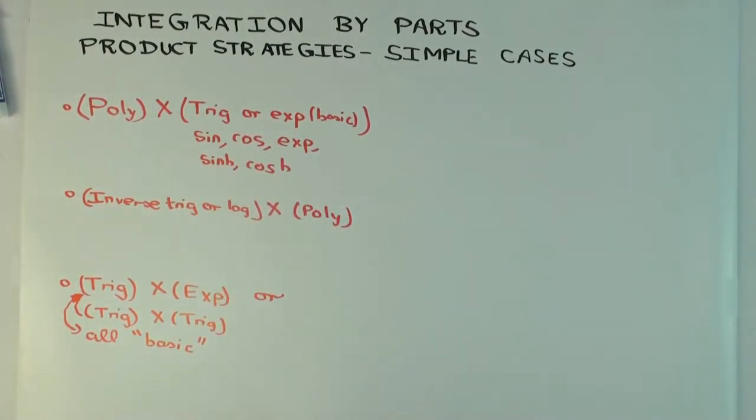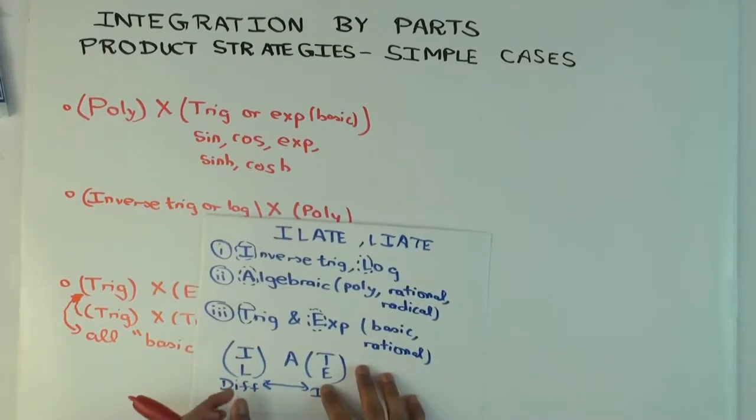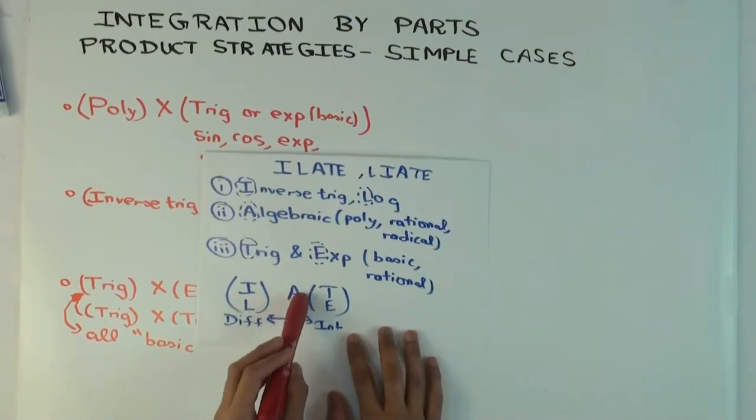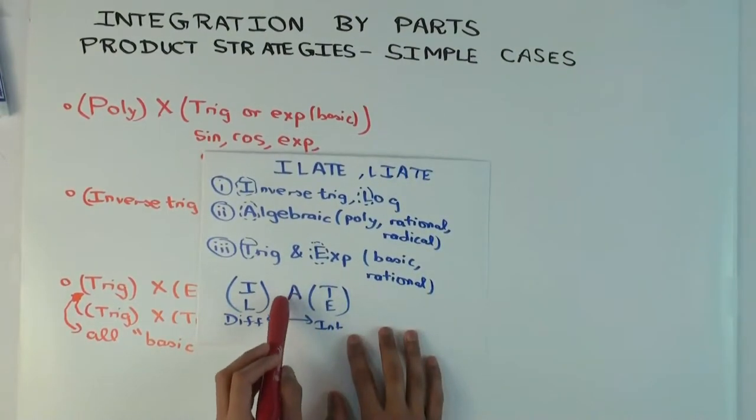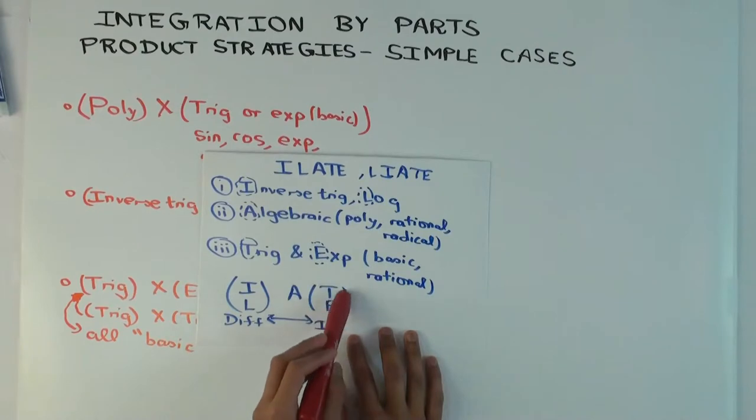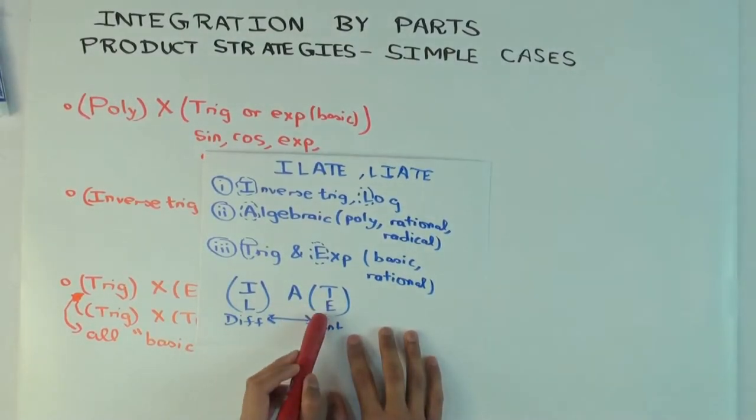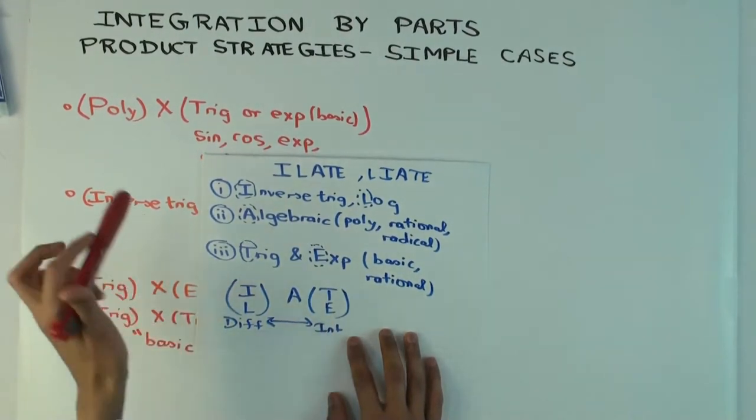Okay, so for these, let's get the ILATE rule out and figure out what that would tell us. If you're following ILATE, then you have polynomial, which is here, algebraic. And you have the trigonometric or exponential, which is here. So the precedence says the polynomial is more good to differentiate, trigonometric or exponential is more good to integrate. Does that make sense if you think about it?